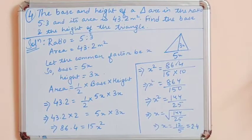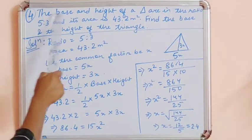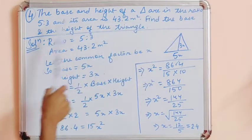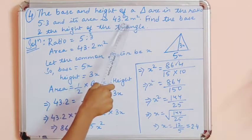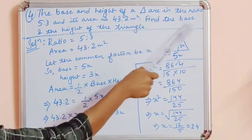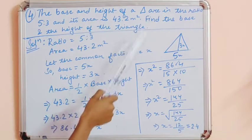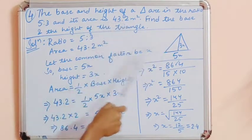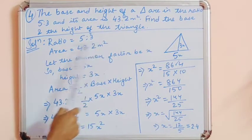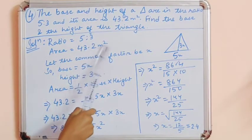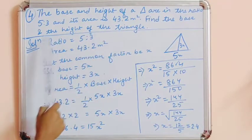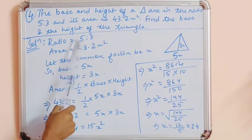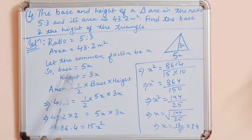Next question: the base and height of the triangle are in the ratio 5:3 and its area is 43.2 m². Find the base and height. The ratio of base to height is 5:3 and area is 43.2 m². Let the common factor be x, so base = 5x and height = 3x.